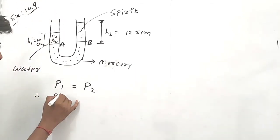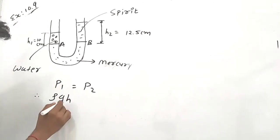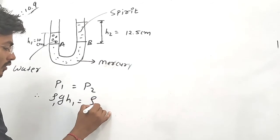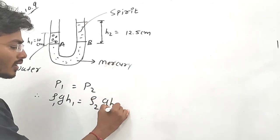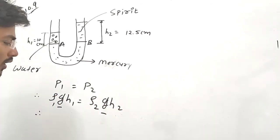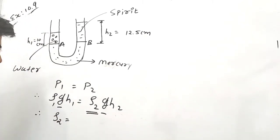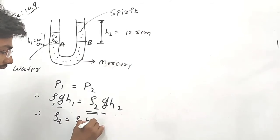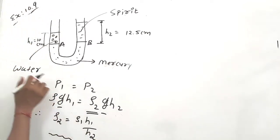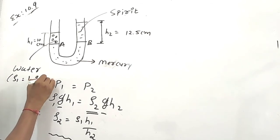As we know, pressure = ρgh. So on one side: ρ1 × g × h1, and on the other side: ρ2 × g × h2. From both sides, g cancels out. Our target is to find ρ2, so ρ2 = ρ1 × h1 divided by h2. The value of ρ1 (water) is 1 gram per centimeter cube.